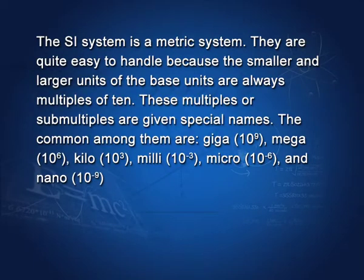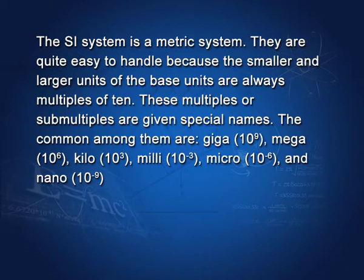Another advantage of the SI system is that it is a metric system. The smaller and larger units of the base units are always multiples of ten. These multiples are given special names. The common ones are: Giga (10⁹), Mega (10⁶), Kilo (10³), Milli (10⁻³), Micro (10⁻⁶), and Nano (10⁻⁹).